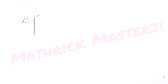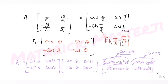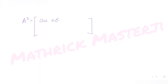Using double angle identities: cos²θ - sin²θ = cos 2θ, and 2 sin θ cos θ = sin 2θ. So A² simplifies to: [[cos 2θ, sin 2θ], [-sin 2θ, cos 2θ]].